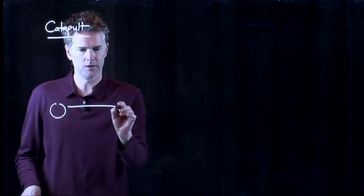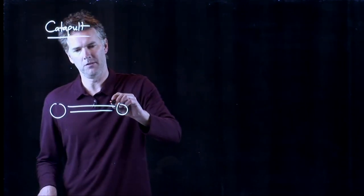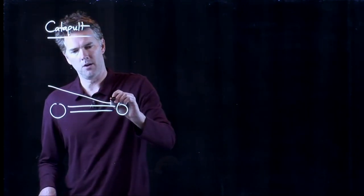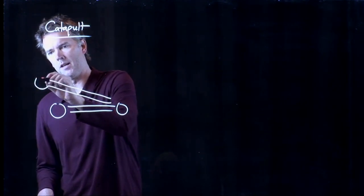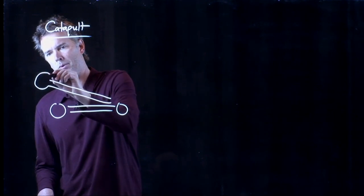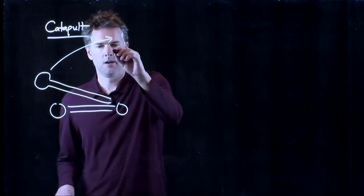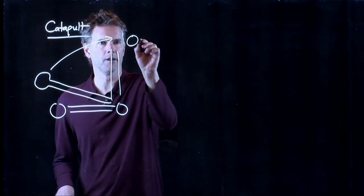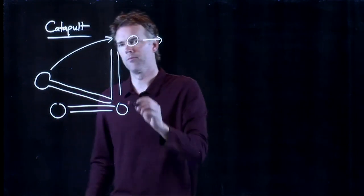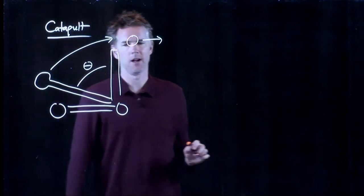So what does a catapult look like? Well, usually they put it on wheels so they can drive around to various places. There's a big arm here that has some sort of bucket on the end. And in that bucket, they put a big item like a cannonball, which they are going to launch by rotating this catapult through a various angle. And let's define that angle as theta.